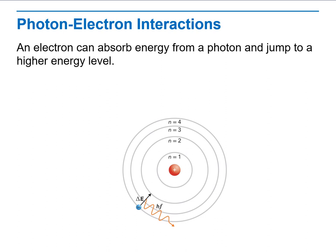Photon-electron interaction. An electron can absorb energy from a photon and jump to a higher energy level when they collide, and that electron becomes excited. Note on the model provided on the slide that N equals 1 is the lowest energy level and N equals 4 is the highest energy level.